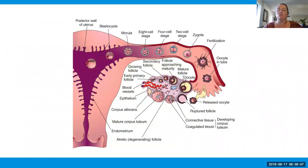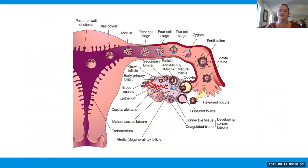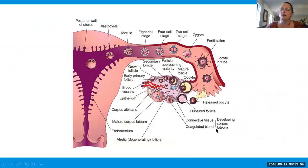Once one of the sperm has actually penetrated the egg, no more sperm are allowed in. Twins are when you have two eggs and two different sperm that fertilize them, or you have a fertilized egg that very quickly, within the first few times it divides, makes two separate people — that's when you have identical twins.